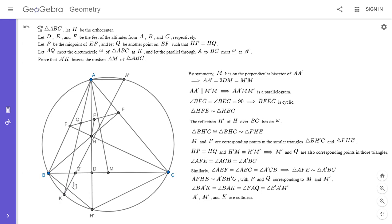So if A prime, M prime, and K are collinear, then since we know A, A prime, M, M prime is a parallelogram, then it follows that A prime K has to bisect AM, because the diagonals of a parallelogram bisect each other.